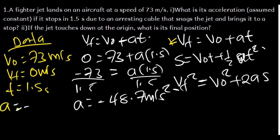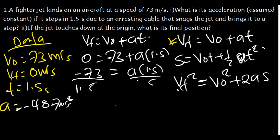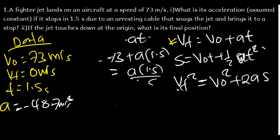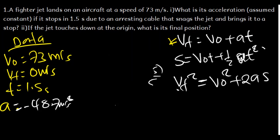The acceleration is negative 48.7 meters per second squared. What would be the final position? We want to find the displacement. We have the final velocity, the initial velocity, and the acceleration. It's either we use the second or the third formula — we should get the same answer. Let me use the third formula: V_final² = V_initial² + 2as.